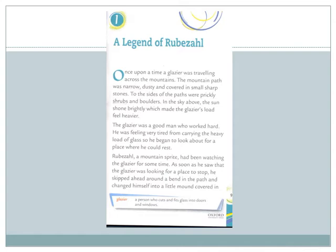In this paragraph, the story starts with a man who is a glazier traveling across the mountains. The mountain path was narrow and covered in small sharp stones, prickly shrubs, and boulders — boulders mean big round stones. The sun shone brightly, which made the glazier's load feel heavier. The glazier was a good, hard-working man who was feeling tired and looking for a place where he could rest.